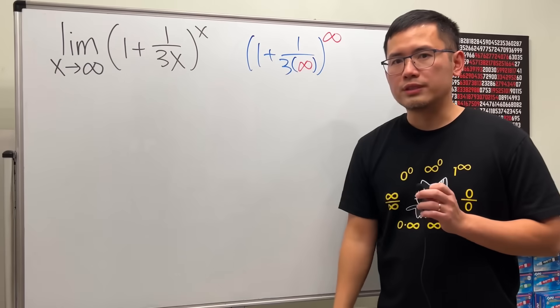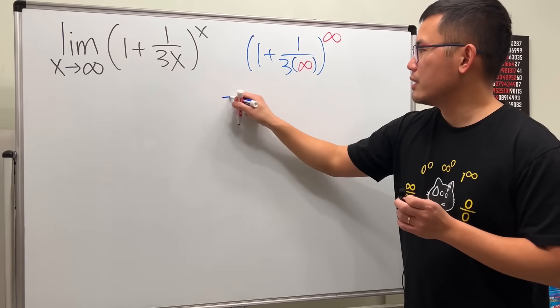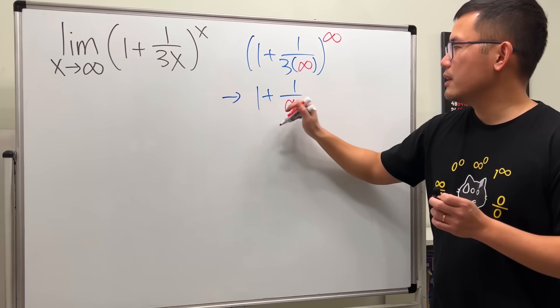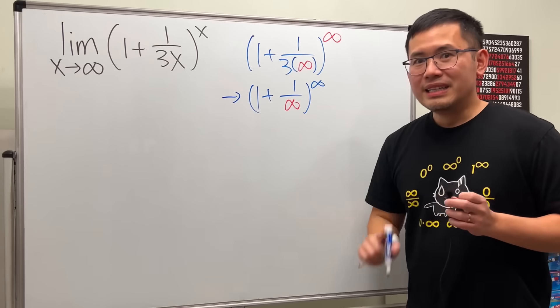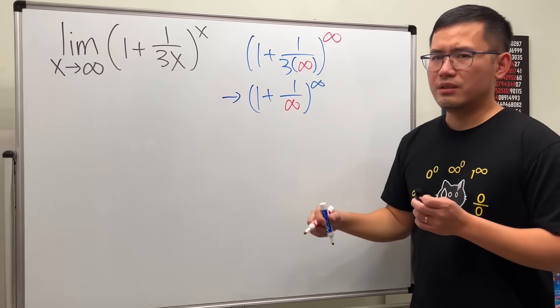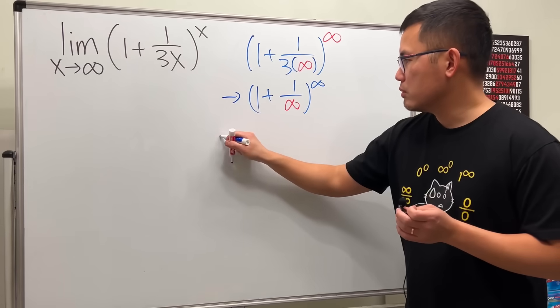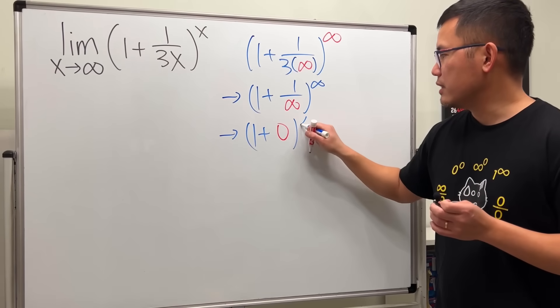When we do that, we will have 1 plus 1 over 3 and the x. Let's just put infinity for that. So 3 times infinity and then raised to the infinity's power. And let's just try to reason this out. Firstly, 3 times infinity is infinity. So this approaches 1 plus 1 over infinity. Next, it seems that 1 over infinity, if you just have that by itself, is just 0. So I'll just say 1 plus 0 raised to the infinity's power.